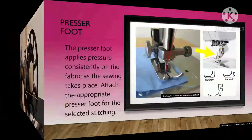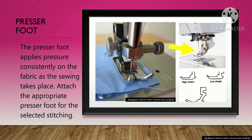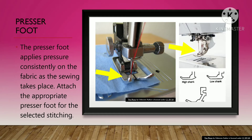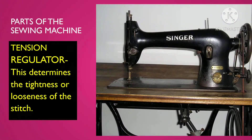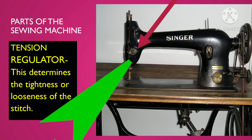The pressure pull applies pressure consistently on the fabric as the sewing takes place. The tension regulator determines the tightness or looseness of the stitch.